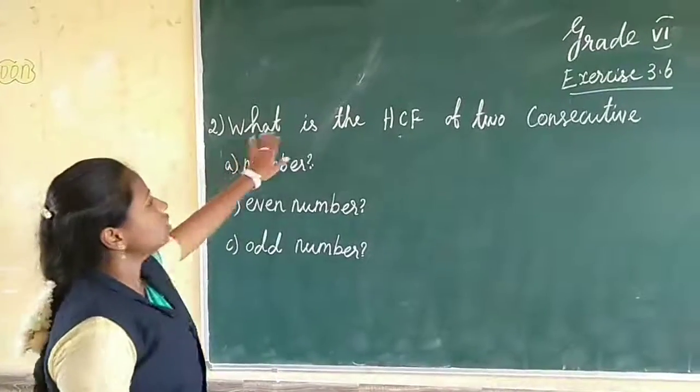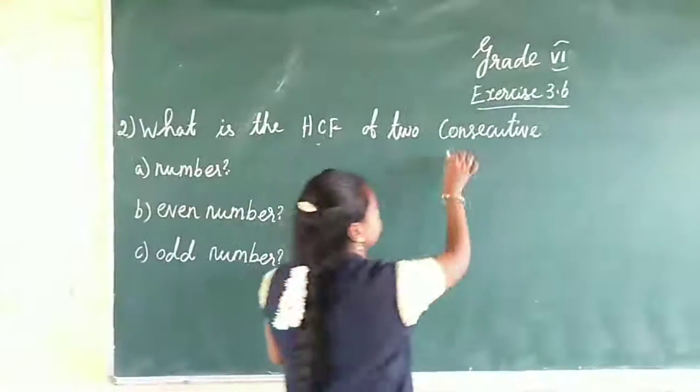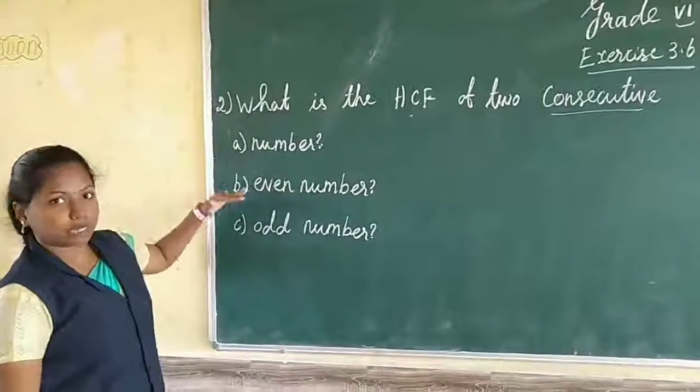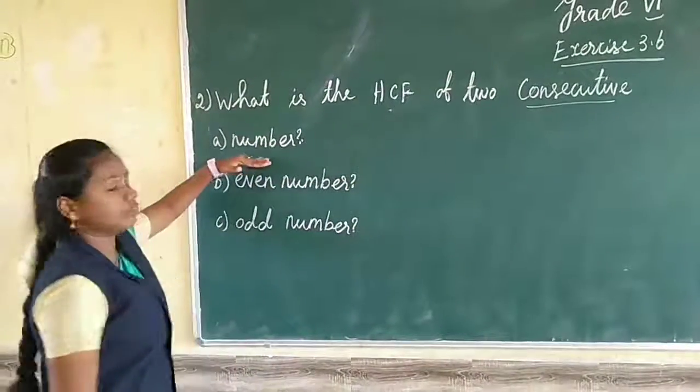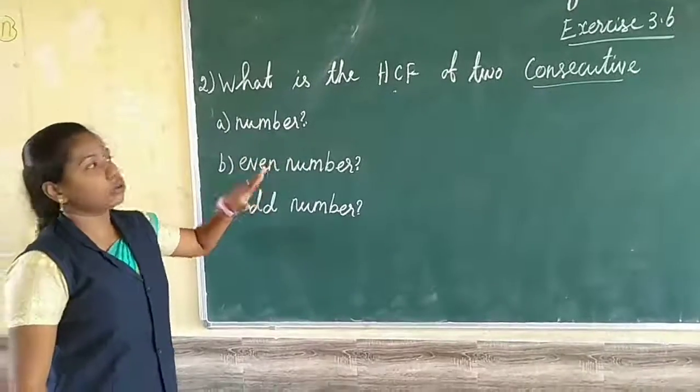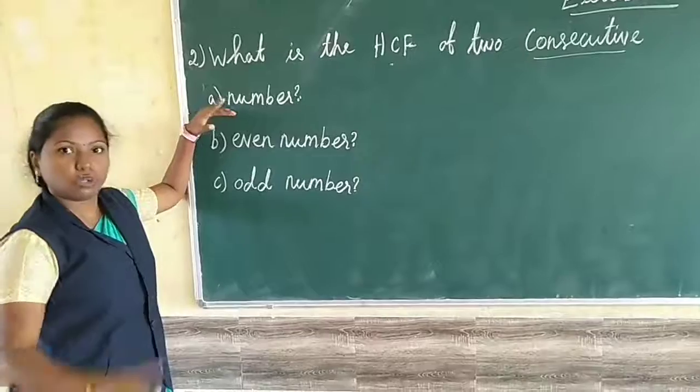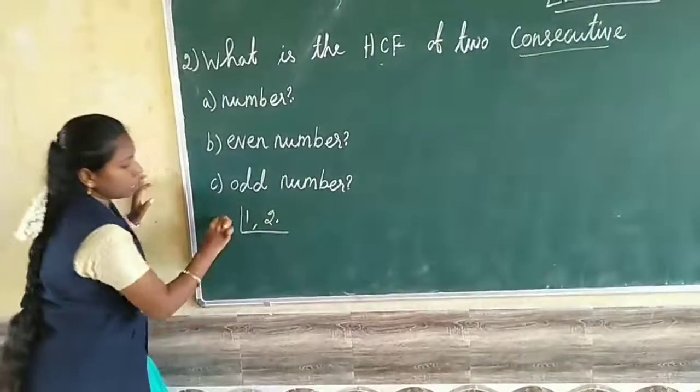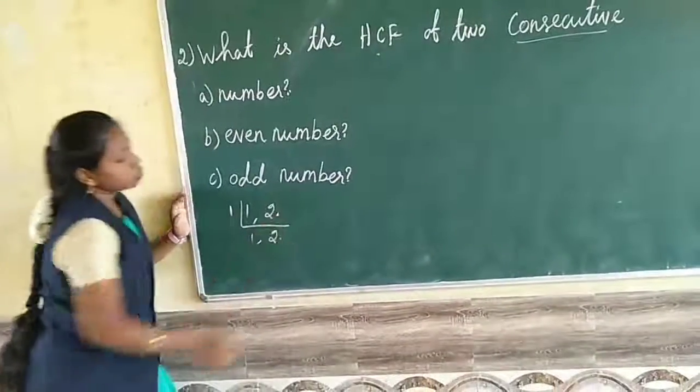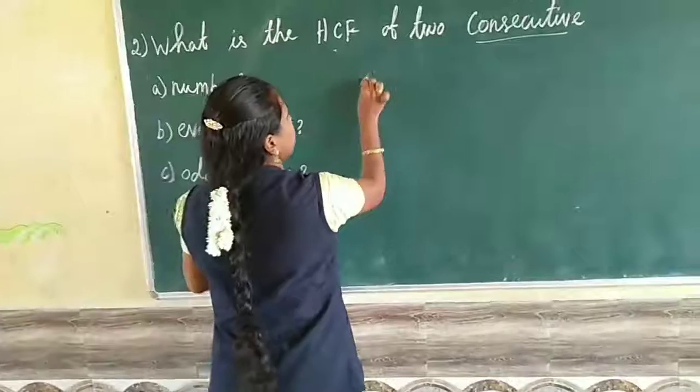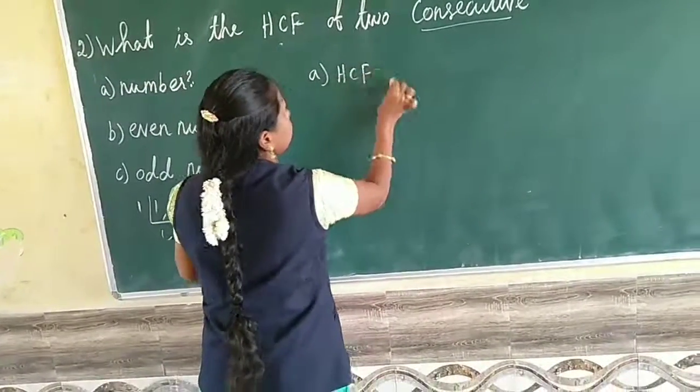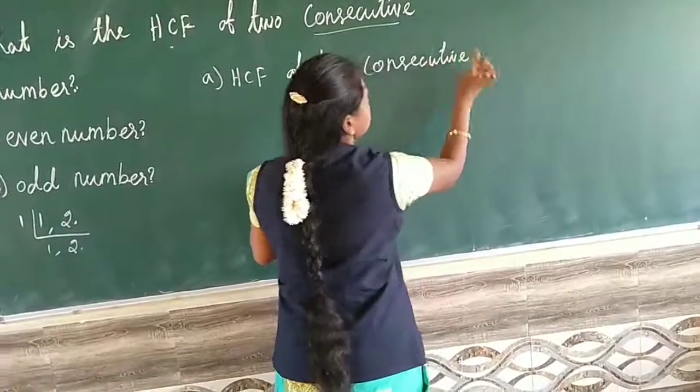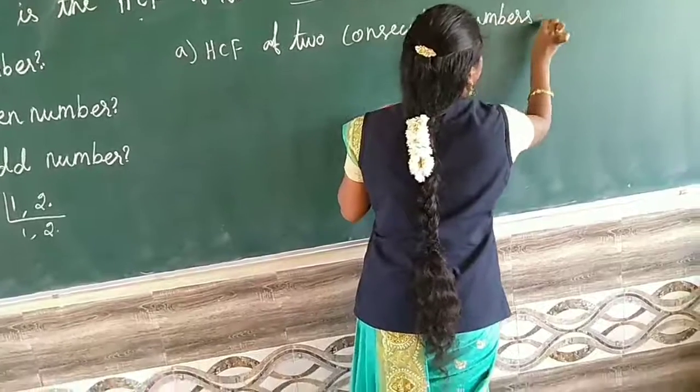Now second sum. What is the HCF of 2 consecutive numbers? Consecutive means continuous numbers. First 2 consecutive numbers, 2 continuous numbers HCF is 1. So HCF of 2 consecutive numbers is 1.